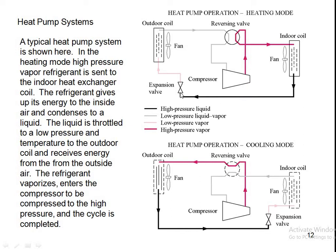Then this liquid goes to the expansion valve and is throttled to a low pressure. Then it goes to the outdoor coil where it receives energy from the outside air, vaporizes, and then goes back to the compressor to be compressed to high pressure vapor again. This is how the heat pump operates — it takes heat from the outdoor coil and rejects it to the inside.